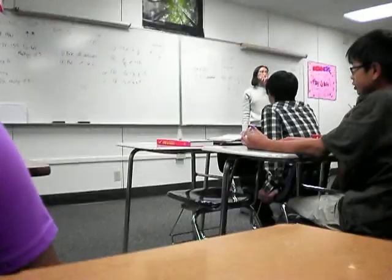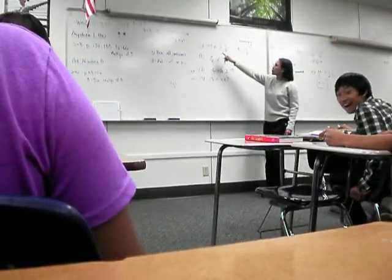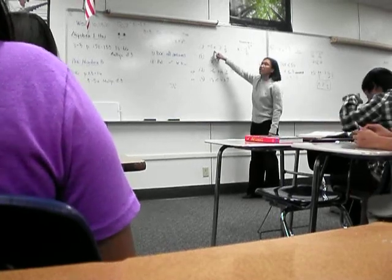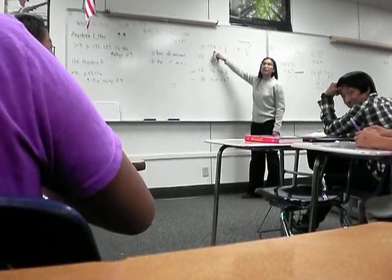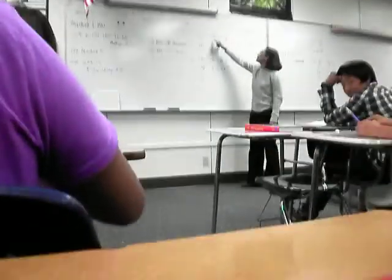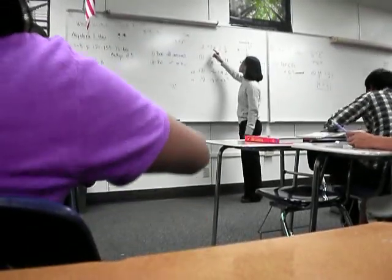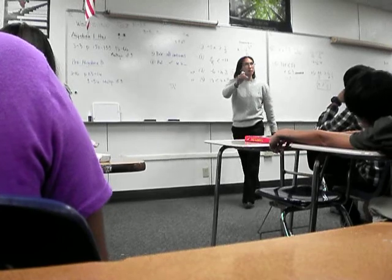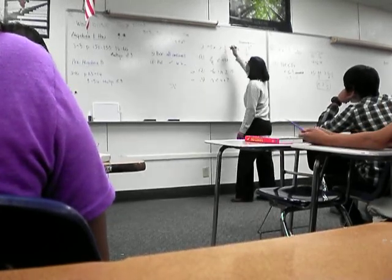Okay, guys. To solve for this, how do I solve for x? I need to do one on both sides — divide. Divide by negative 5. So, if I'm dividing by a negative number, I need to flip the sign.